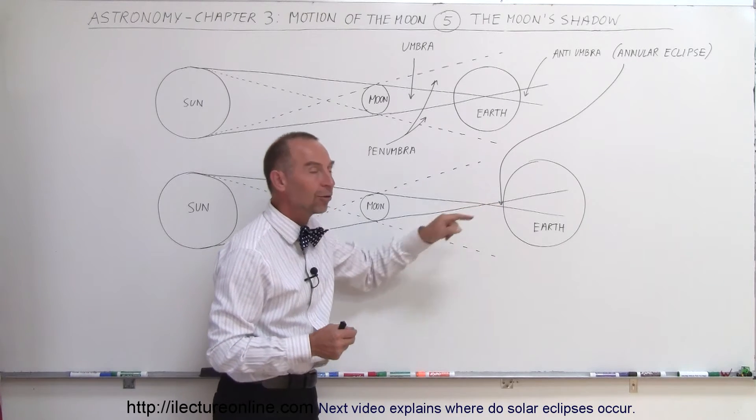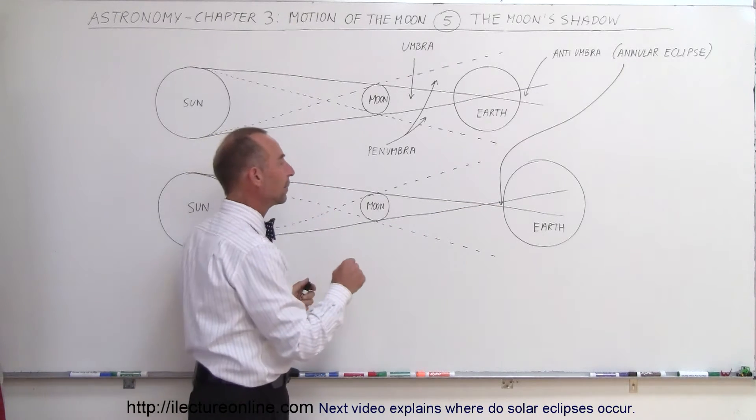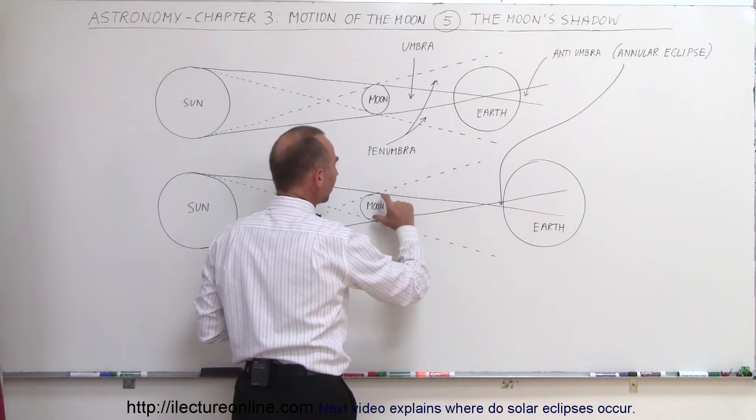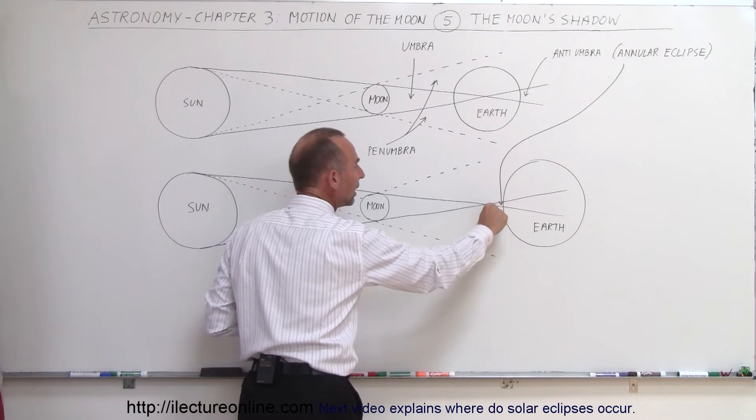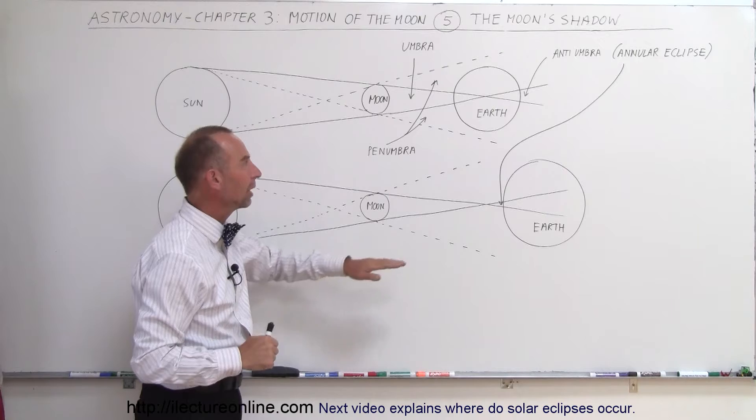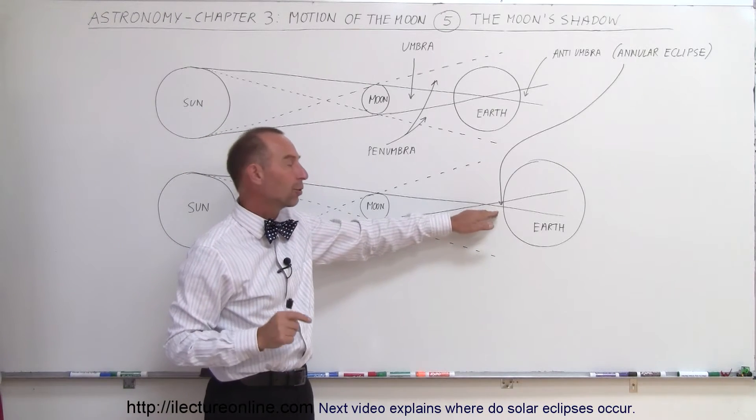And then at that point right there, there's actually sunlight to be seen. And because of that, part of the sun will be blocked, but a small ring of the sun will actually be visible. And we then have what we call an annular eclipse.